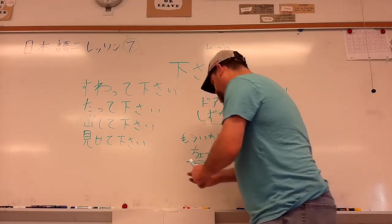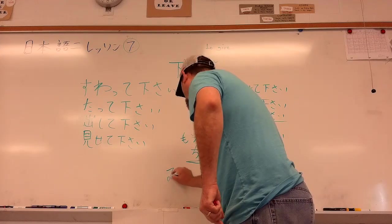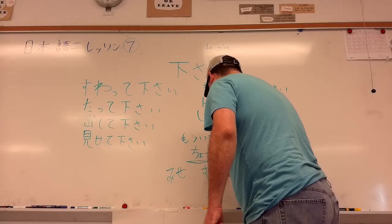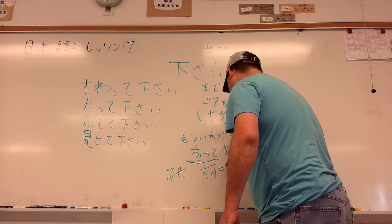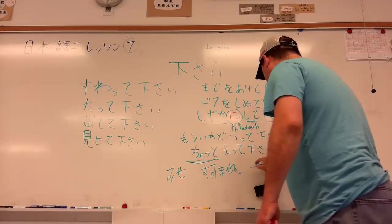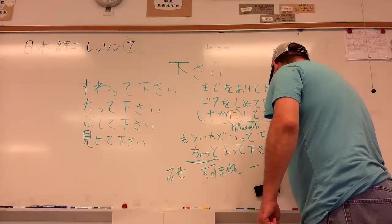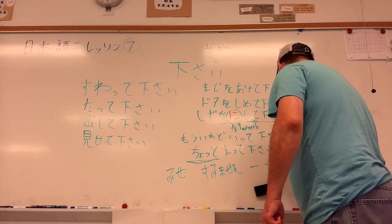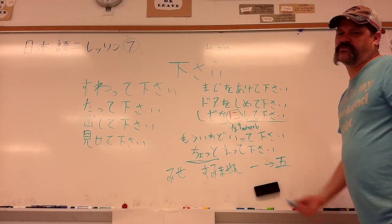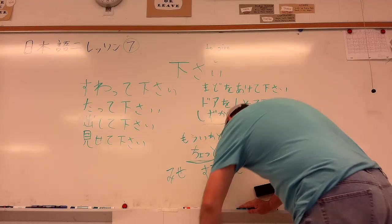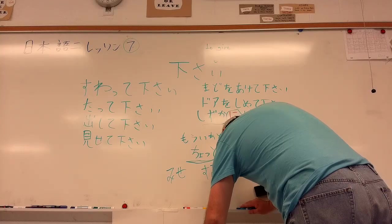We already know. We've got omise. So omise is the catch-all word for store. And then we know sumimasen already. We know ichi through go. I can't write kanji now. I almost wrote yon. So we know ichi through go already. So that's a review more or less.